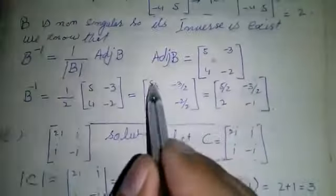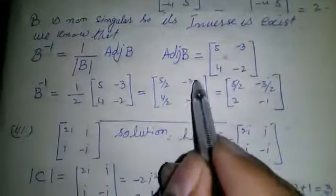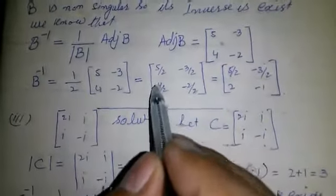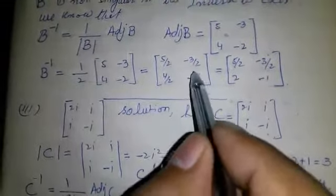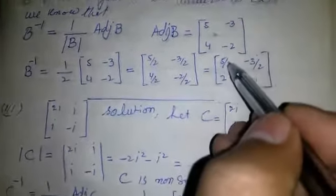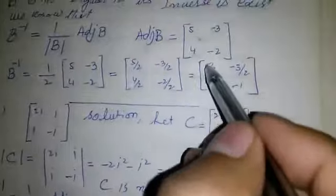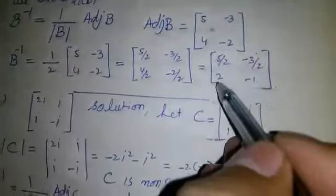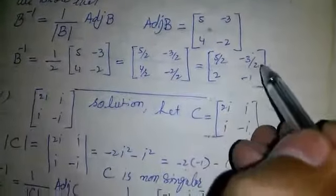B⁻¹ is equal to (1/2) times [[5, -3], [4, -2]], which equals [[5/2, -3/2], [4/2, -2/2]]. On simplification we get [[5/2, -3/2], [2, -1]].